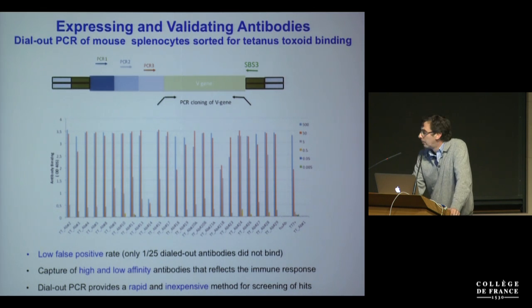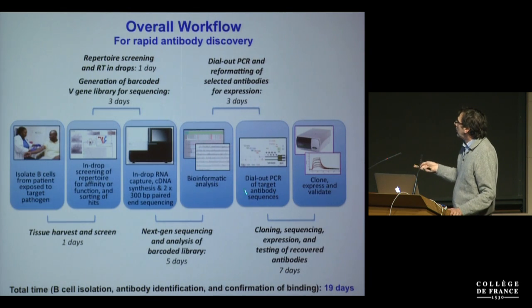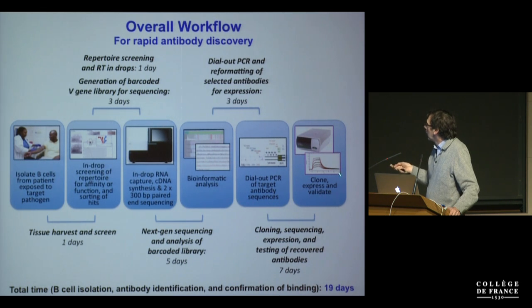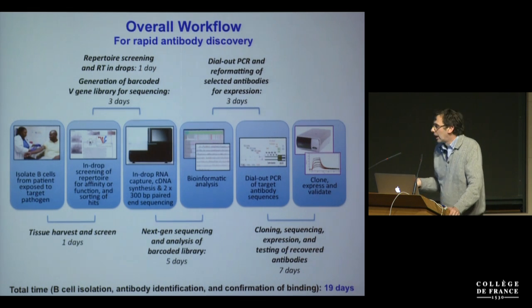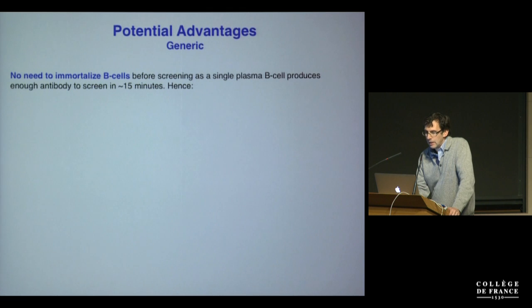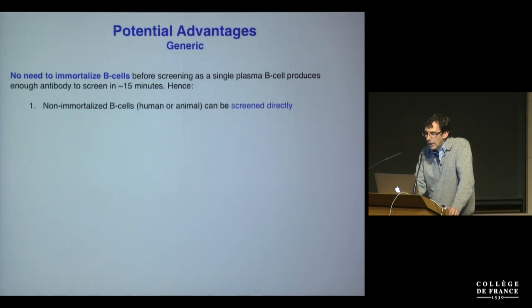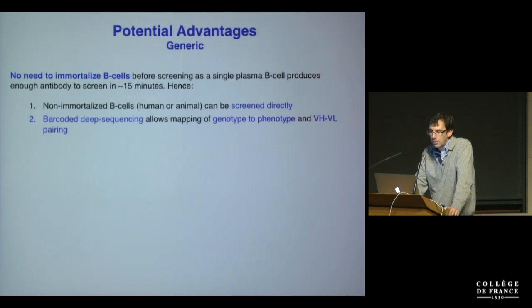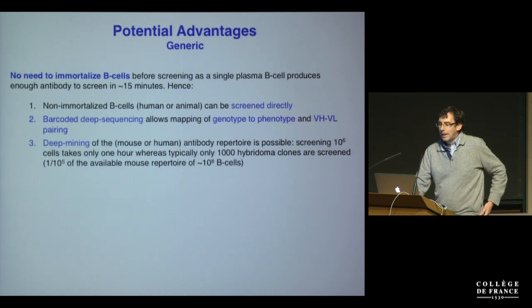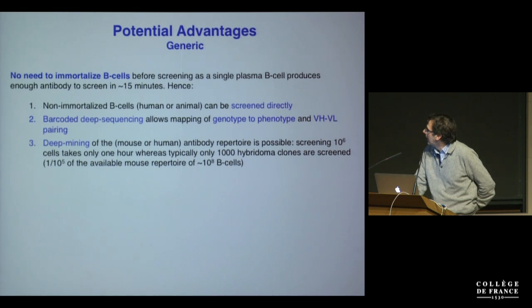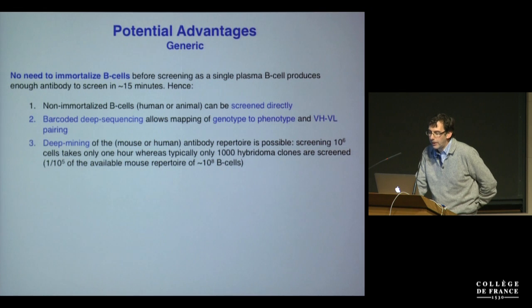Dial-out PCR is a very rapid and inexpensive method for screening hits — you can go from bioinformatics analysis to having cloned, expressed, and validated antibodies in only 7 days, meaning the total time from B-cell isolation to antibody identification and confirmed binding takes only 19 days. The key advantage is that you don't need to immortalize the B cells, because a plasma B cell produces enough antibodies to screen in only 15 minutes. You can screen non-immortalized B cells directly from any human or animal, and screen a million cells in only one hour, compared to typically only about 1,000 hybridoma clones which is only 1/100,000 of the available mouse repertoire.